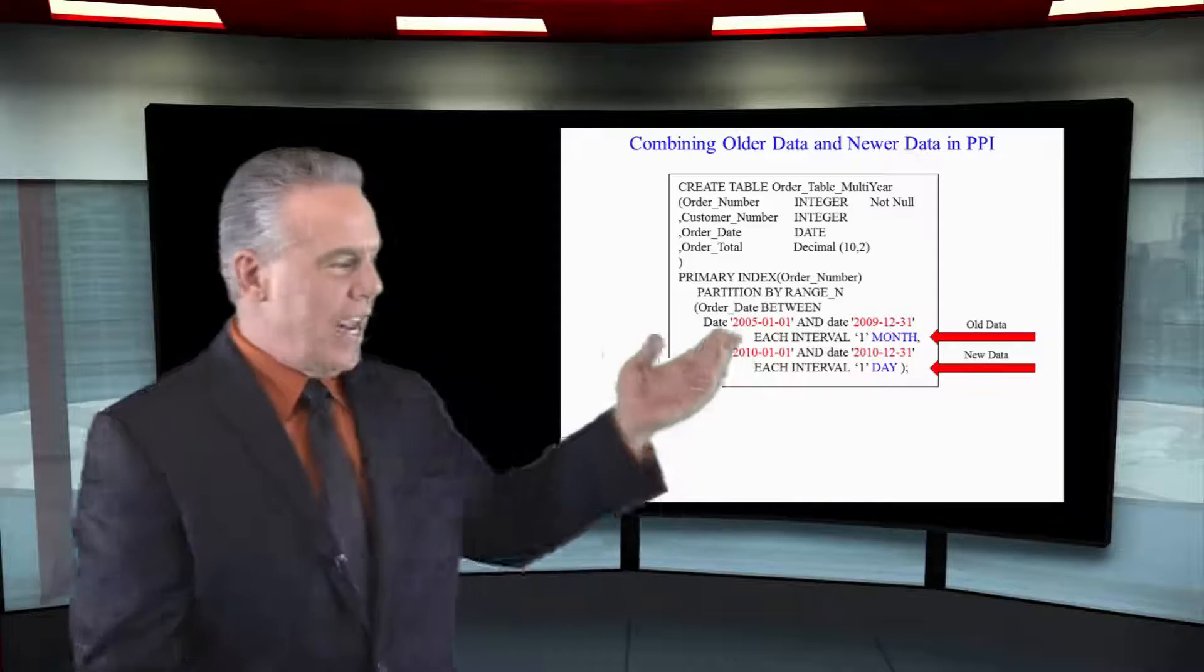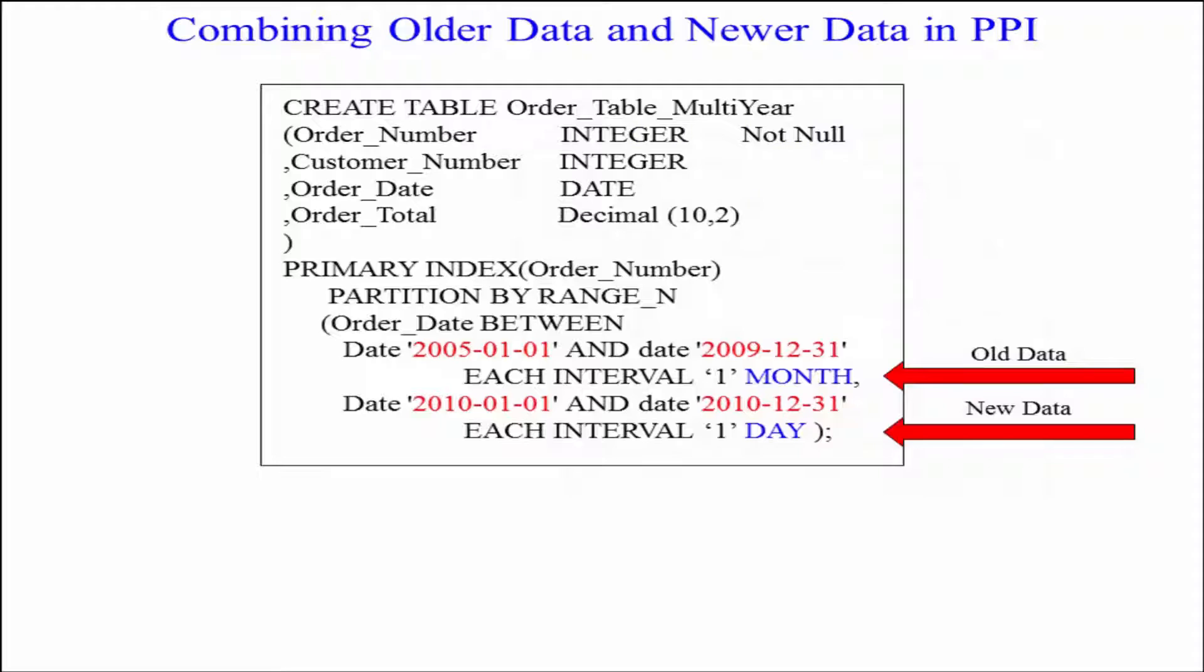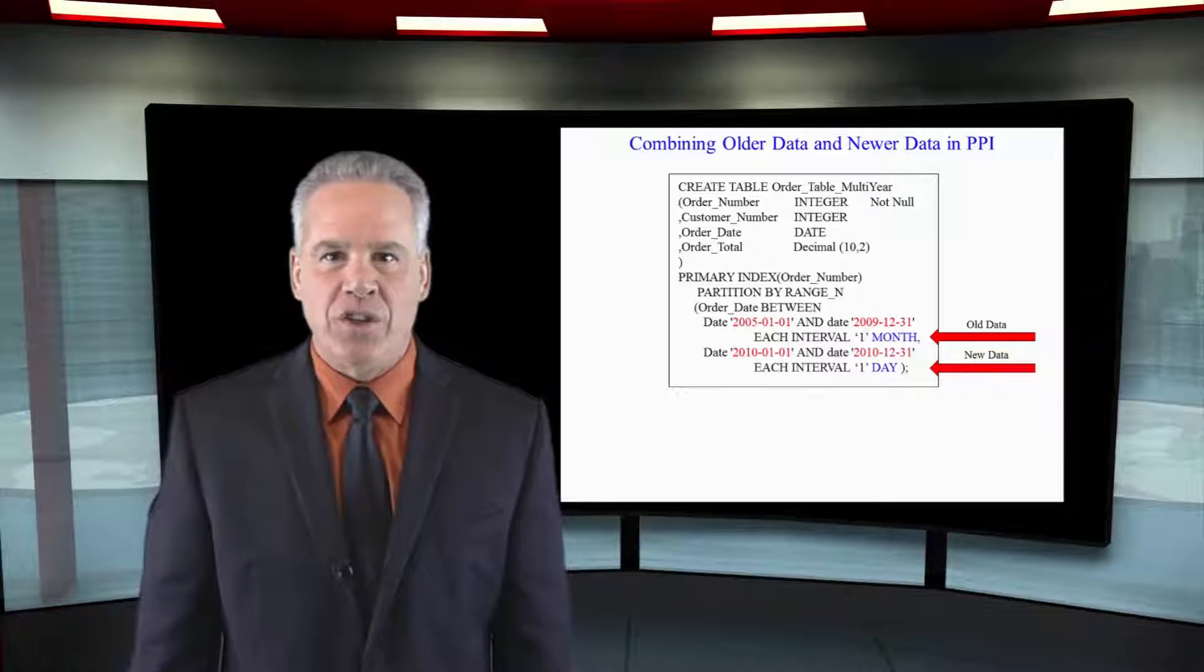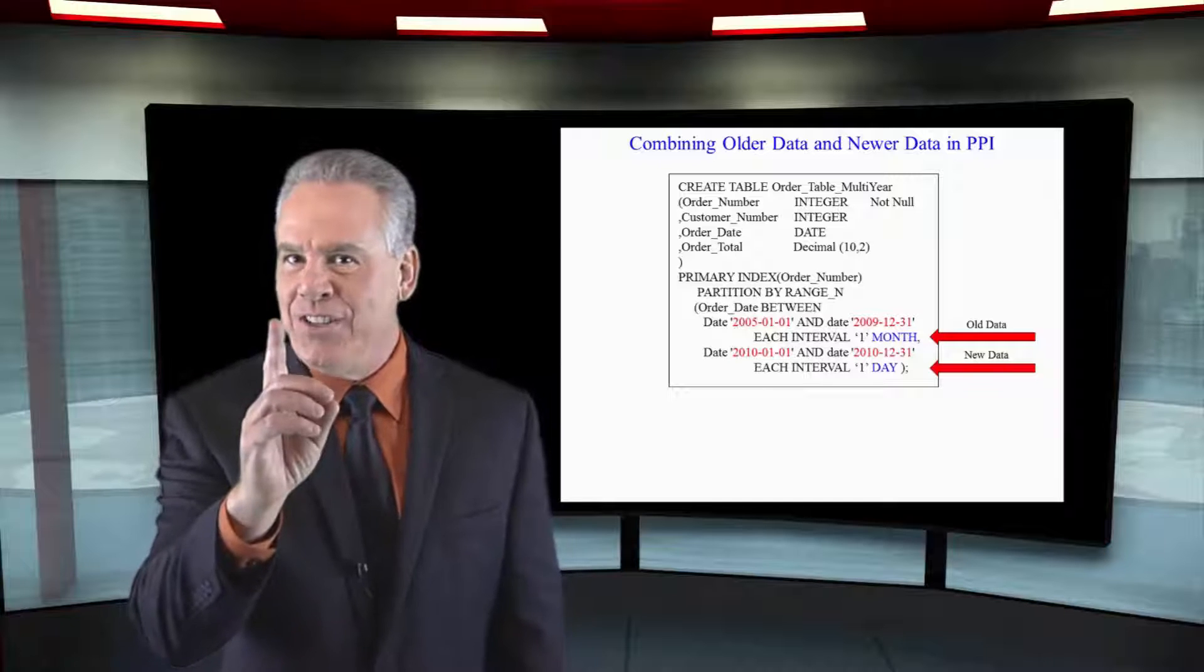This is different. We're taking all 2005 orders to 2009 orders, and we're partitioning with each interval one month. Then we're taking our last year, which is 2010 data, and we're going to partition that each day.